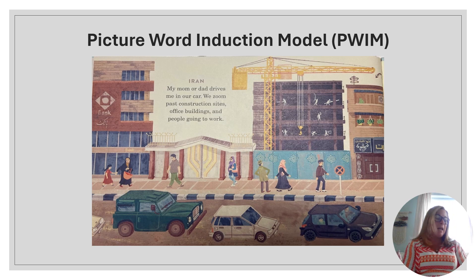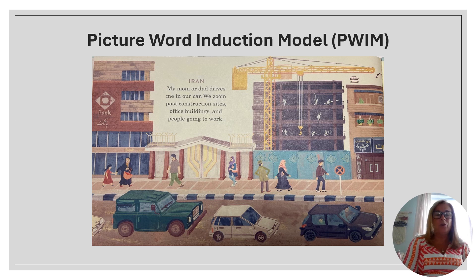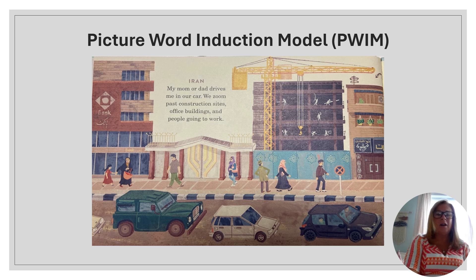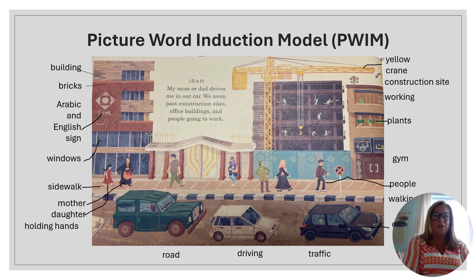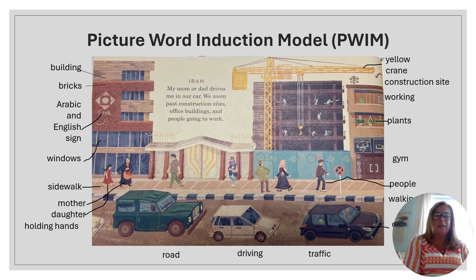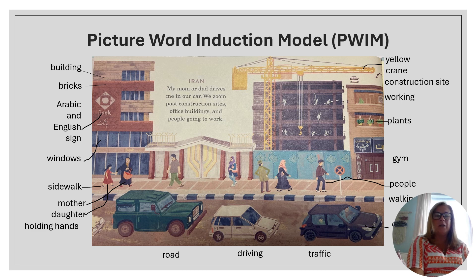Next we're going to go over some scaffolding strategies that will help your MLL students and perhaps some other students in your class as well. The first one is called picture word induction model — we refer to that as PWIM — and I will give you the steps in the next few slides. First, you would choose a picture. This example is a picture directly from the book, but it can be any picture you choose. Then you would ask the student to name some things they see in the picture. If they don't know, you can help by naming some things yourself. You can put as many or as few labels as you want, depending on where your student is.